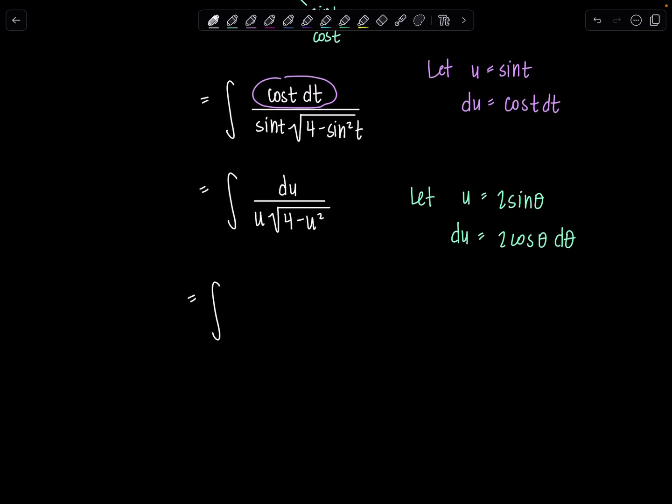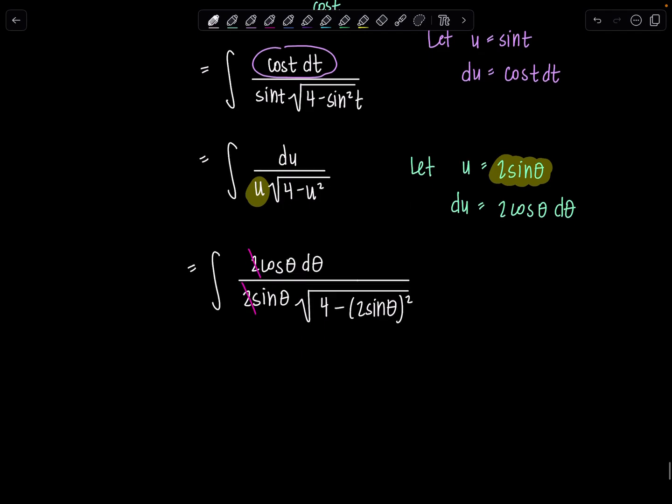So then let's see what we've got going on now. In the numerator, instead of du, we have 2 cosine theta d theta. This u all by itself is 2 sine theta. And then we have square root 4 minus 2 sine theta squared. Beautiful. How are we doing? Okay, good. Now let's see what else. These 2's cancel. That's good.